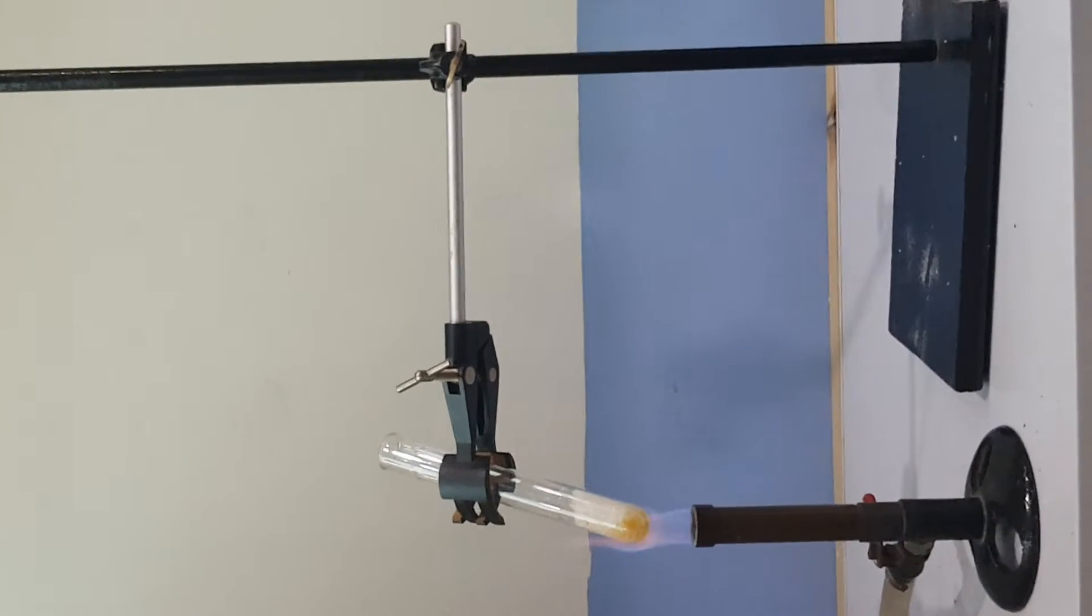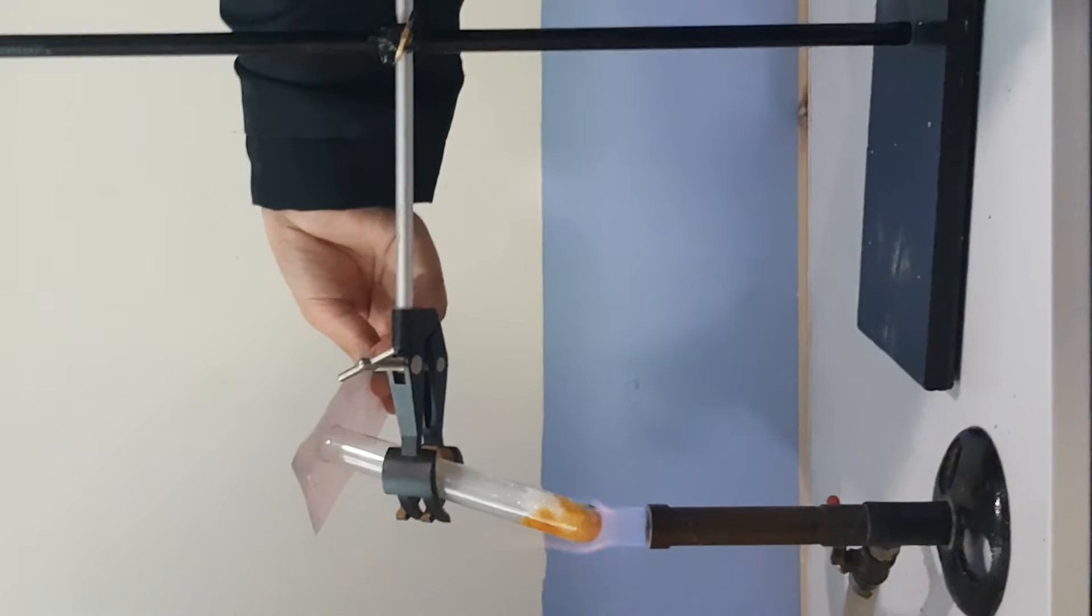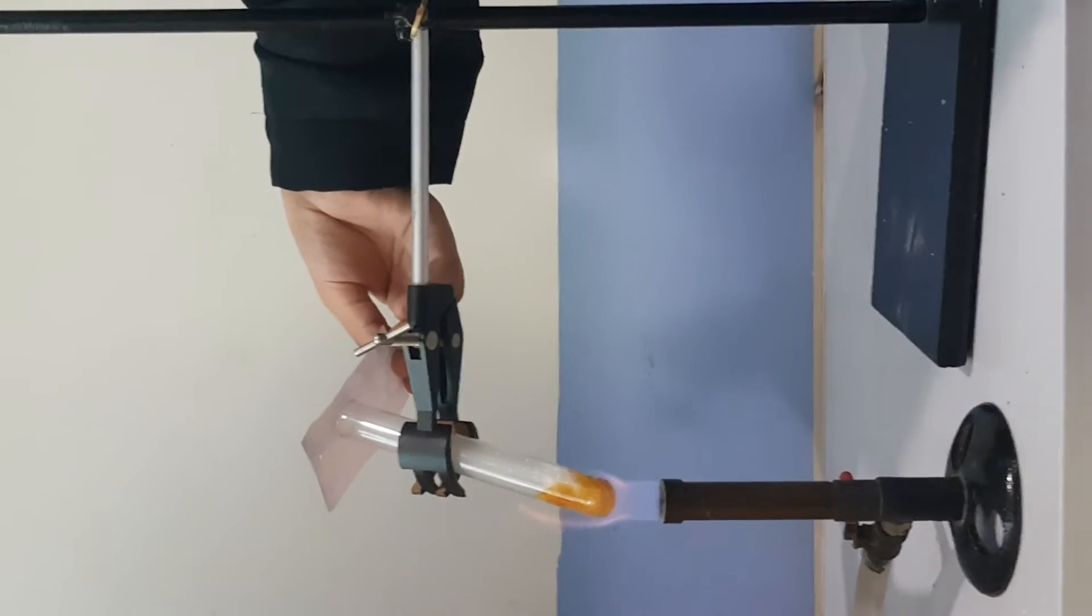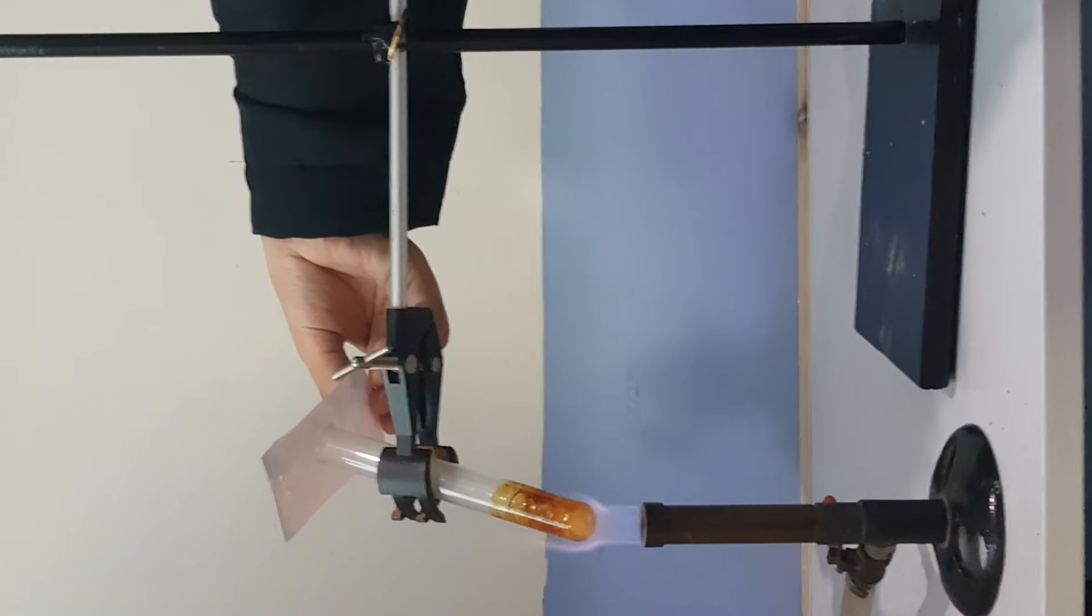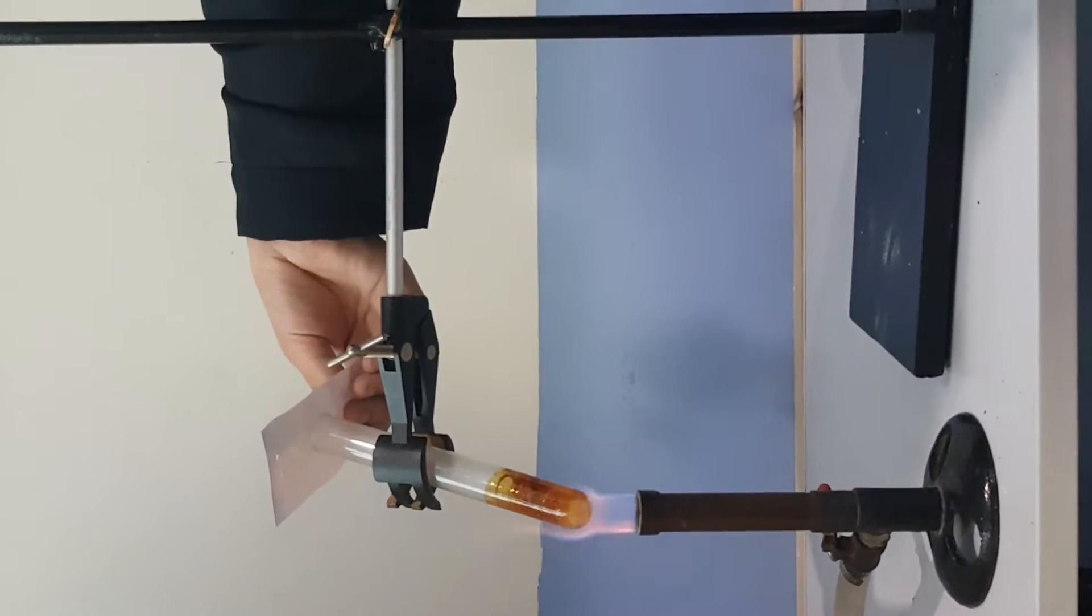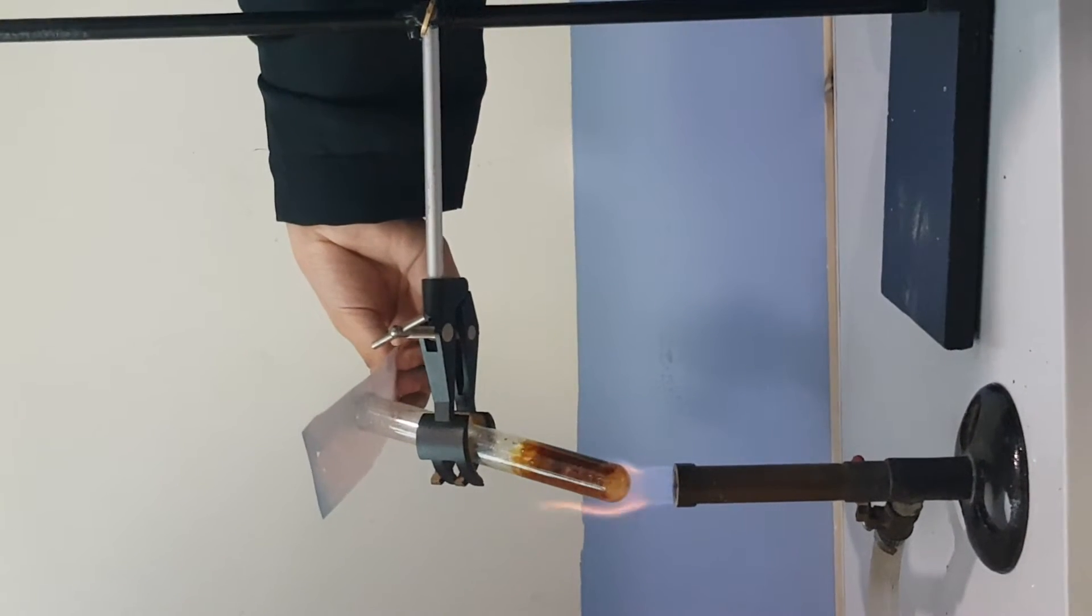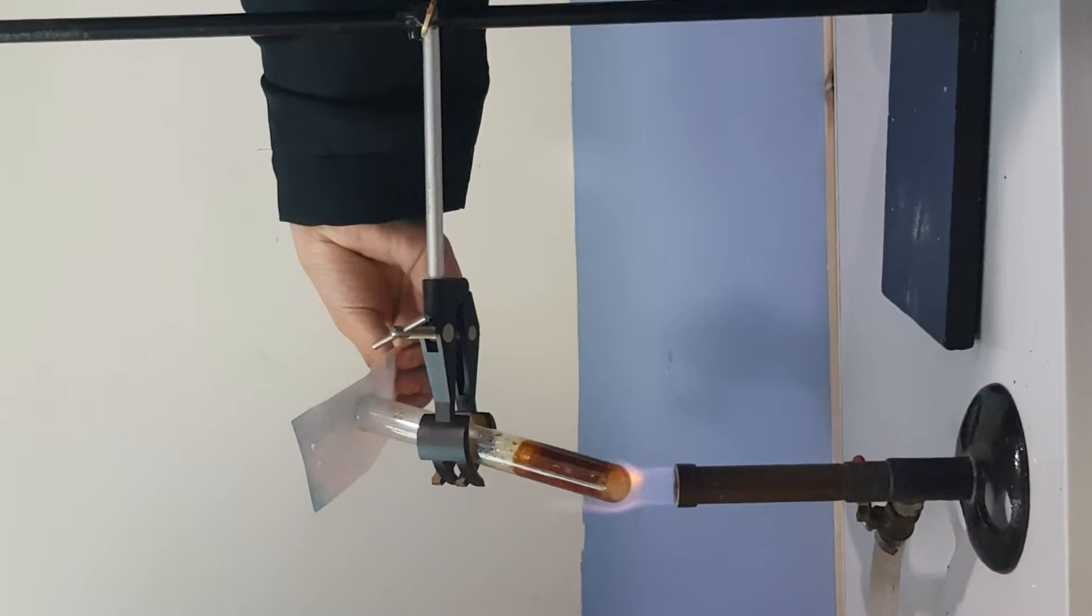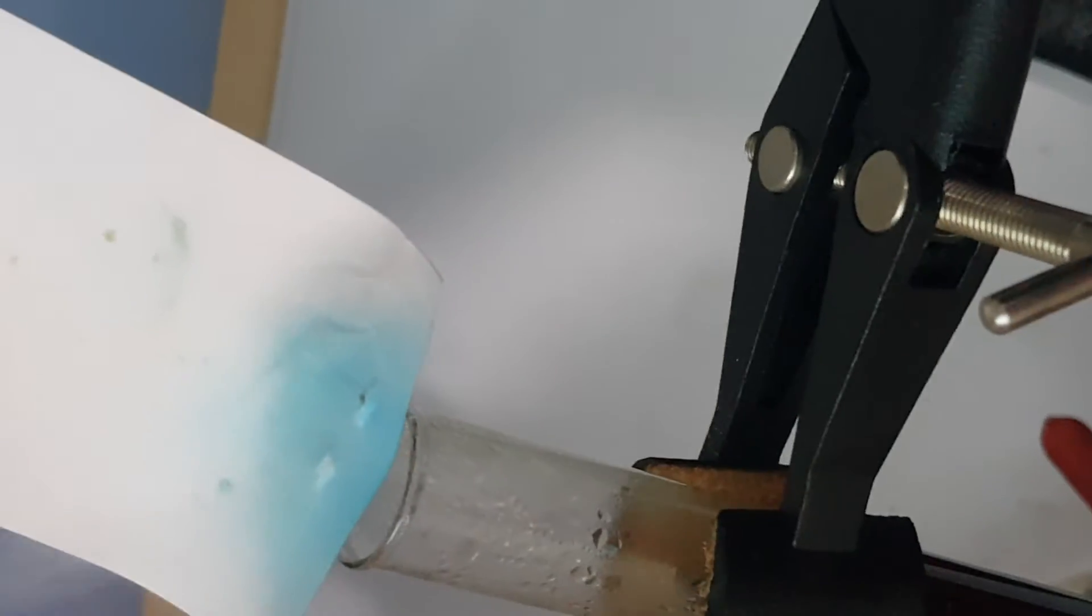As you are watching, the sugar is being heated and changing its color. We have placed cobalt chloride paper on the open end of the test tube. It is turning black. The cobalt chloride has changed its color.